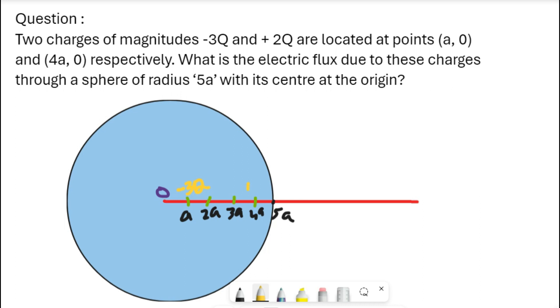And the second charge +2Q is placed at the point (4a,0). That's also done. So we can write flux is equal to - you remember always the enclosed surface is important - so charge enclosed divided by epsilon 0.